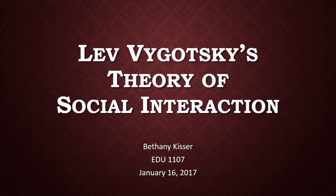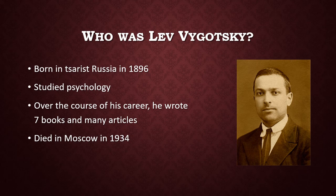Hi everyone, I'm Bethany Kisser and today I'm going to be talking about Lev Vygotsky's theory of social interaction. Lev Vygotsky was born in Tsarist Russia in 1896. He was Jewish and at that time there was a lottery because Jewish students were only allowed to fill a 3% quota of the student population. He was chosen and he studied psychology. He had a relatively short life and career but was able to write seven books and many articles, many of which are still being translated from Russian, before he passed away in Moscow in 1934.